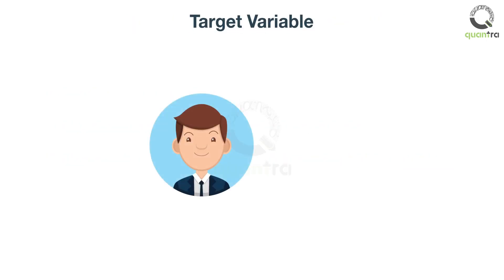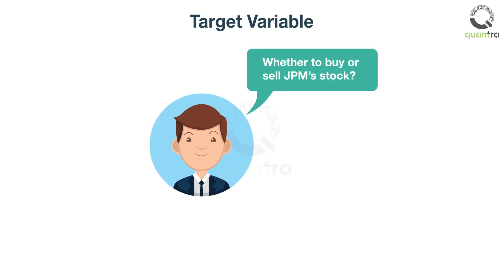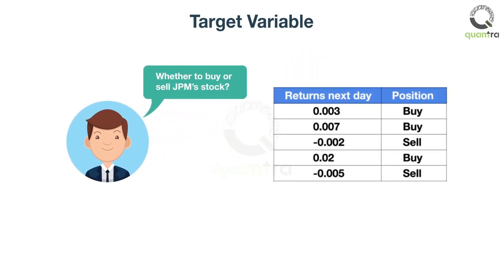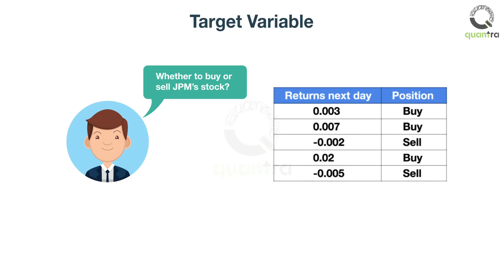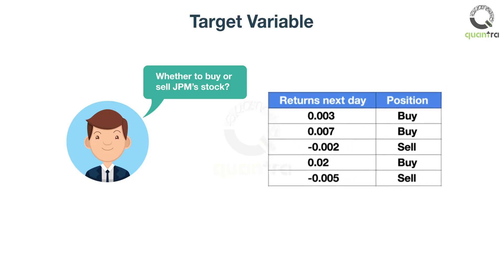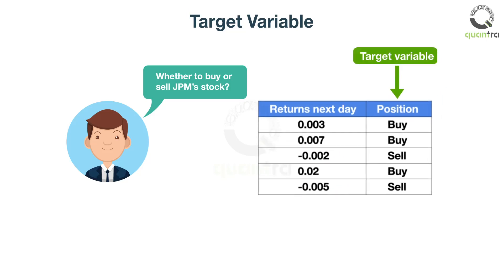For example, Rob, a stock trader, defines his problem statement as whether to buy or sell JP Morgan stocks. He further defines when to buy or sell so that the ML algorithm understands the logic. Rob defines buy as when the expected returns next day is positive, and sell as when the expected returns next day is negative. Rob takes the historical data of the returns and starts marking these days as buy and sell. This column marked as buy and sell is called the target variable.